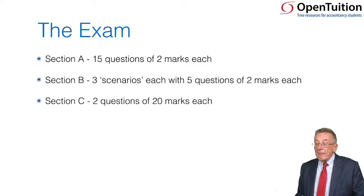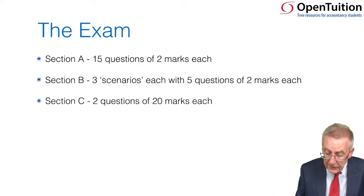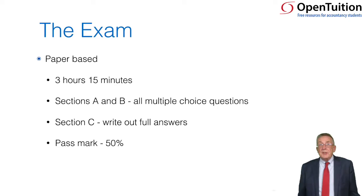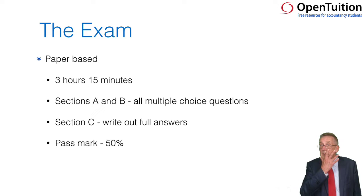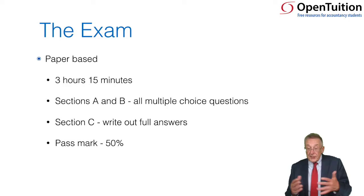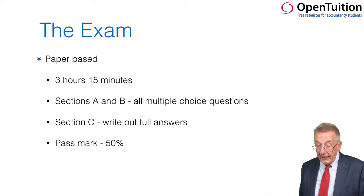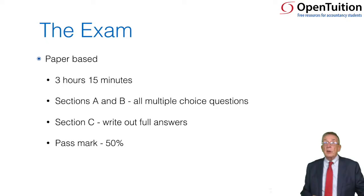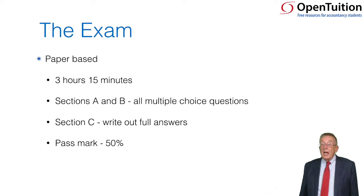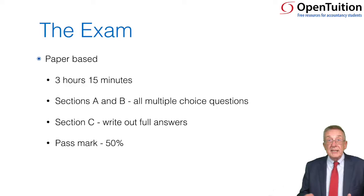Depending on what country you're in, there are two options. In some countries there are still paper-based exams. If you take a paper exam, you get three hours fifteen minutes. Sections A and B are multiple choice with four answers to choose from. Section C requires you to write out full answers in an answer booklet, including calculations and theory. The pass mark is 50%.